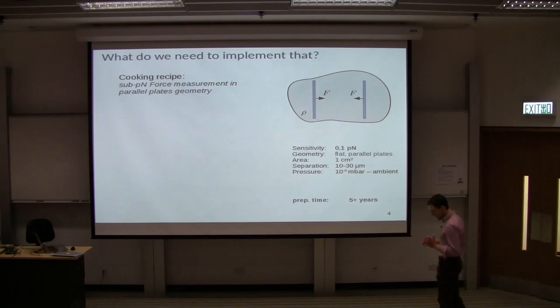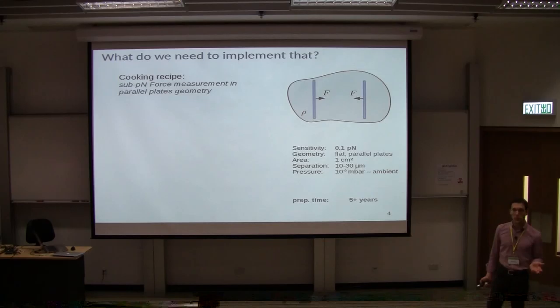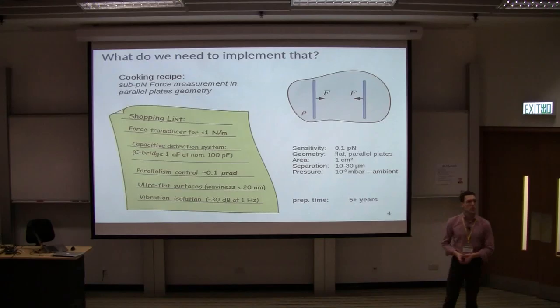So, okay. When you start a new experiment, what you want is, of course, always kind of a manual. You need a list of things, what you need to do, what you need to buy, how to set up the entire experiment. And in this case, what we want to have is a cooking recipe for 0.1 piconewtons parallel plates experiment at large distance, with probably variable pressure, whatever. So the first thing you have to come up with is the grocery list of things you need.